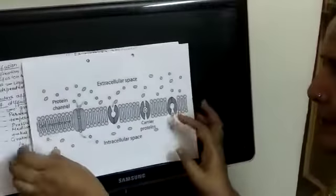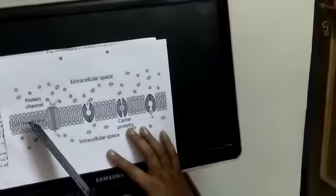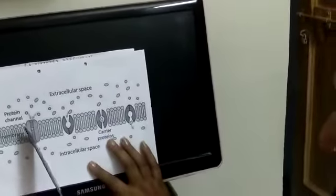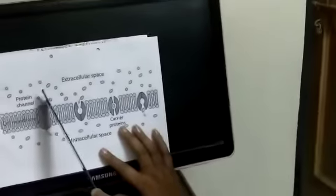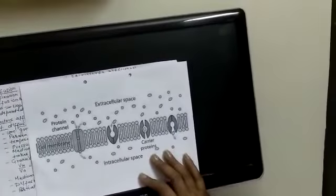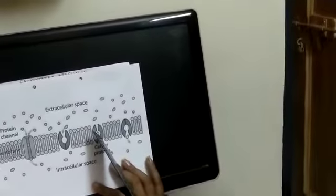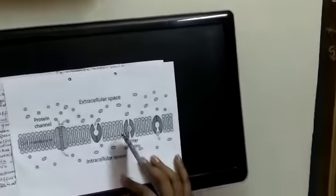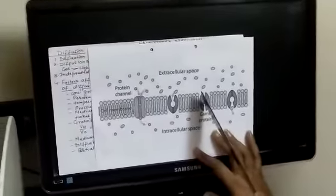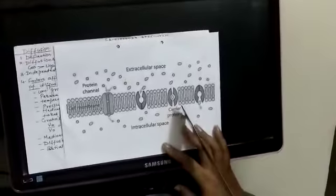Now you can see in this chart. These are the lipids and these are the proteins. Now this is protein channel. Through this protein channel, the substances from outside can go inside. Naturally one side will have a cell and in between will be intercellular space. Now there are some carrier proteins. These carrier proteins take substances from outside and release them inside.